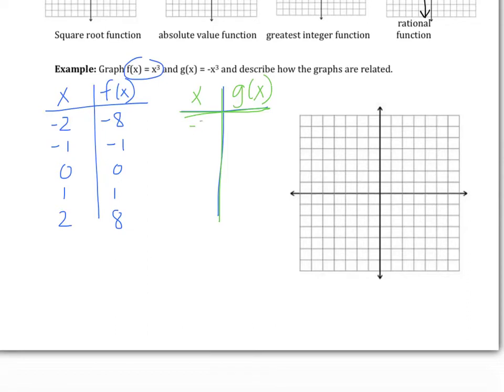Over here I'll pick the same values, and plugging into g of x, I'm going to get positive 8, 1, 0, negative 1, and negative 8.